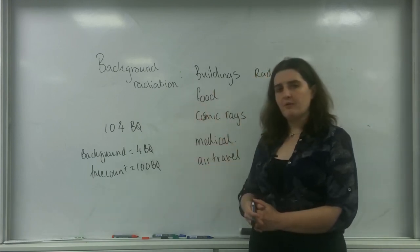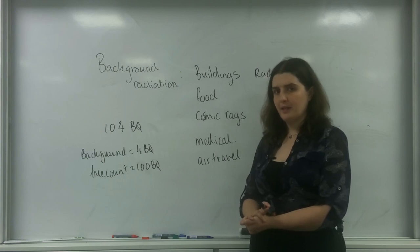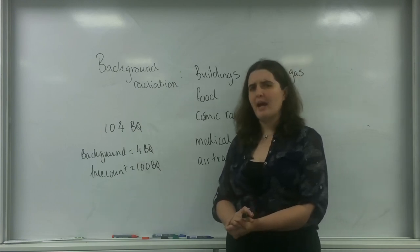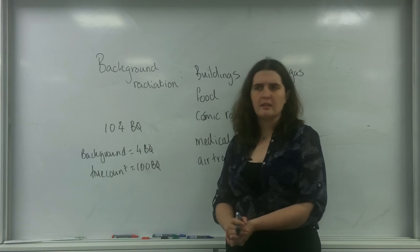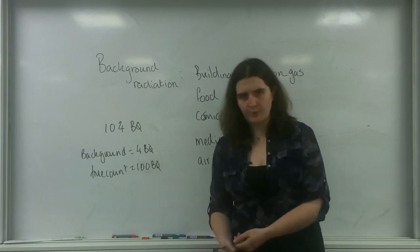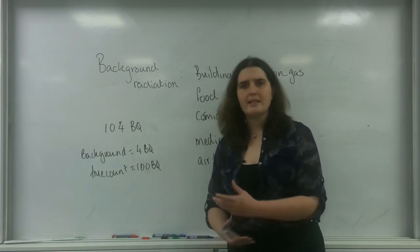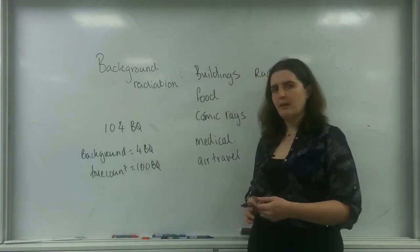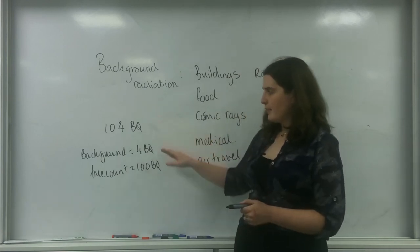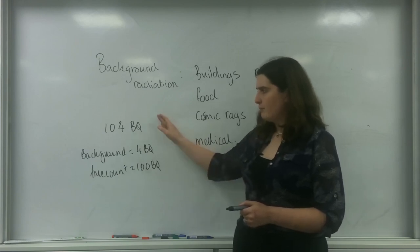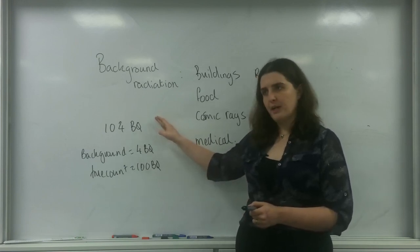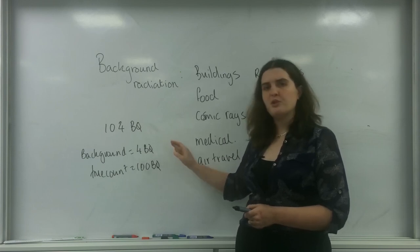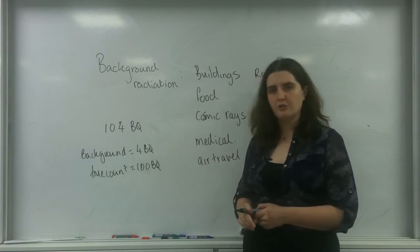The other thing you need to be aware of is how you might have to apply background radiation into a calculation. The easiest way to think about it is like a zero error — it's an error because the scales are faulty and reading some mass, so you have to zero it before you can get the true count. My count on my Geiger-Müller tube is 104 becquerels, my background is four, which means truly I'm only getting 100 becquerels.